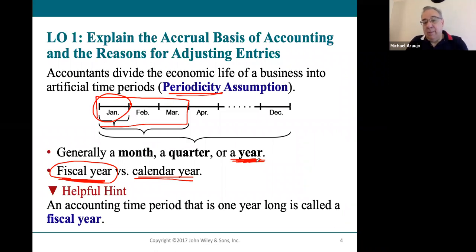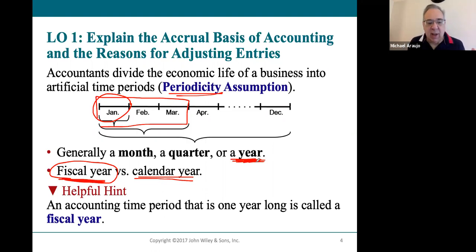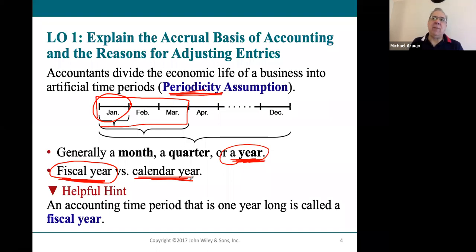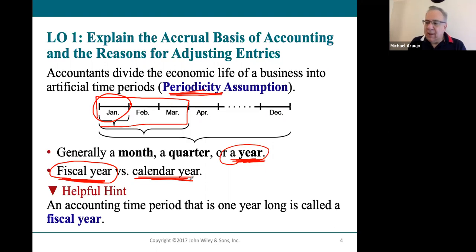A lot of businesses decide that, because of their type of business and when they're busier — such as retail — using a fiscal year is much better for reporting their profit and loss. Other businesses, like a dental practice or a doctor's office, don't have a big season, so it makes more sense for them to simply use the calendar year.